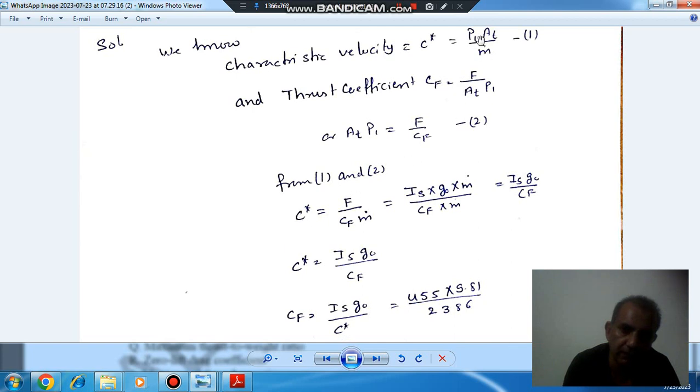Because AT P1 is equal to C star M dot. So C star M dot is equal to F by Cf, or we can say C star is equal to F by Cf M dot. And F is specific impulse into weight flow rate, so that is M dot into G.